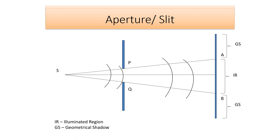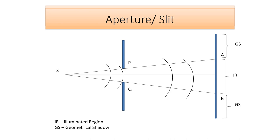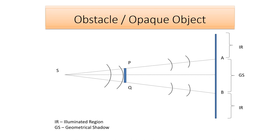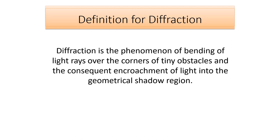But contrary to our expectation, we can see that if an aperture or slit is placed between the source and the screen, the light gets encroached into the geometrical shadow region — that is, you will get bands of light in the geometrical shadow region. Similarly, in the case of an obstacle, there is encroachment of light into the geometrical shadow region, and this happens due to the bending of light rays over the corners of obstacles.